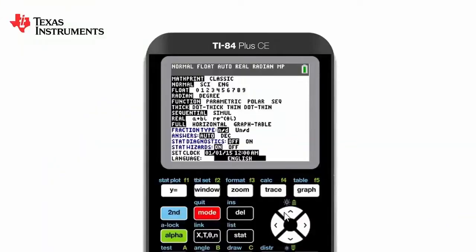You will notice that the calculator is currently in math print, which is a much nicer, more natural way of seeing the calculations. The answers are given as normal values rather than in scientific or engineering mode, and we are on float rather than giving our answers in a certain number of decimal places. Important in trigonometry, we have a choice of either radians or degree mode, and most of the other aspects of the settings is fairly self-explanatory.